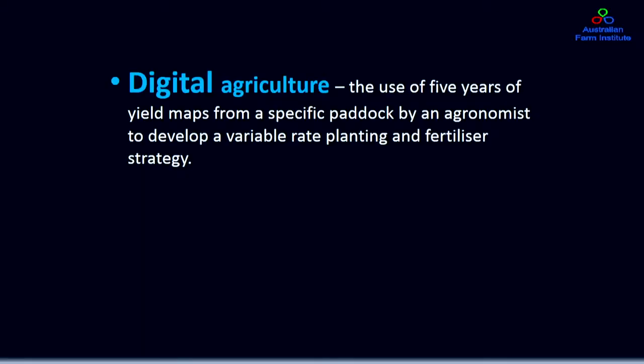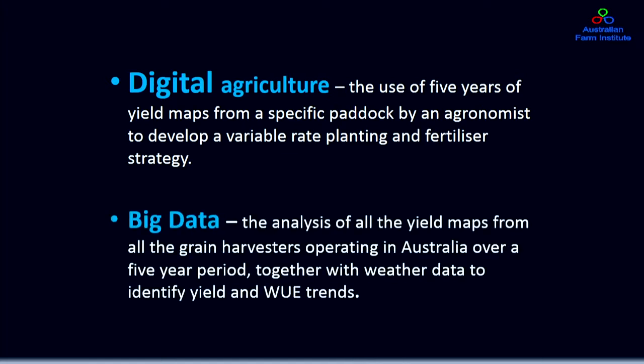To describe the distinction: digital agriculture might be the use of 5 years of yield maps from a specific paddock by an agronomist to develop a variable rate planting and fertiliser strategy, whereas big data would be the analysis of all yield maps from all grain harvesters operating in Australia over a 5-year period together with weather data to identify yield and water use efficiency trends. Differences of scale — digital agriculture is more about individuals and management decisions.